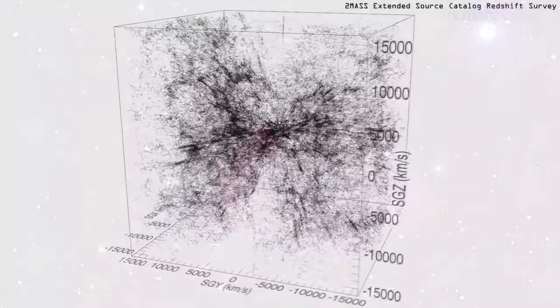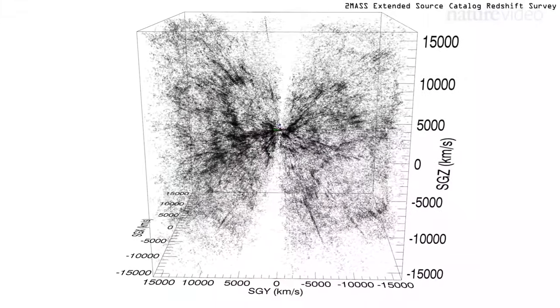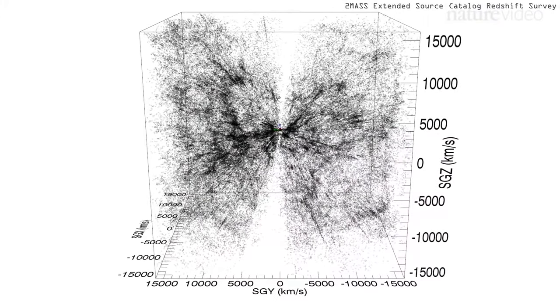The peculiar motion of an object is its motion less that part of its motion associated with the Hubble flow due to the expanding universe.